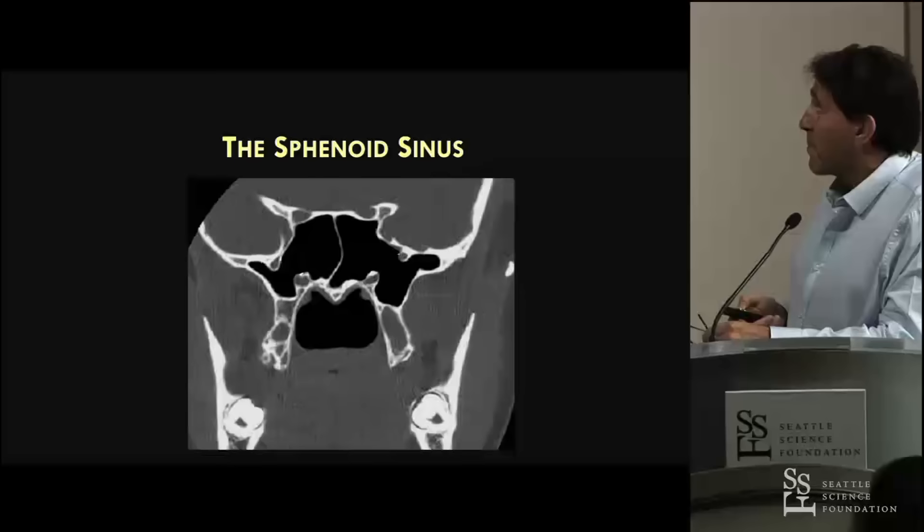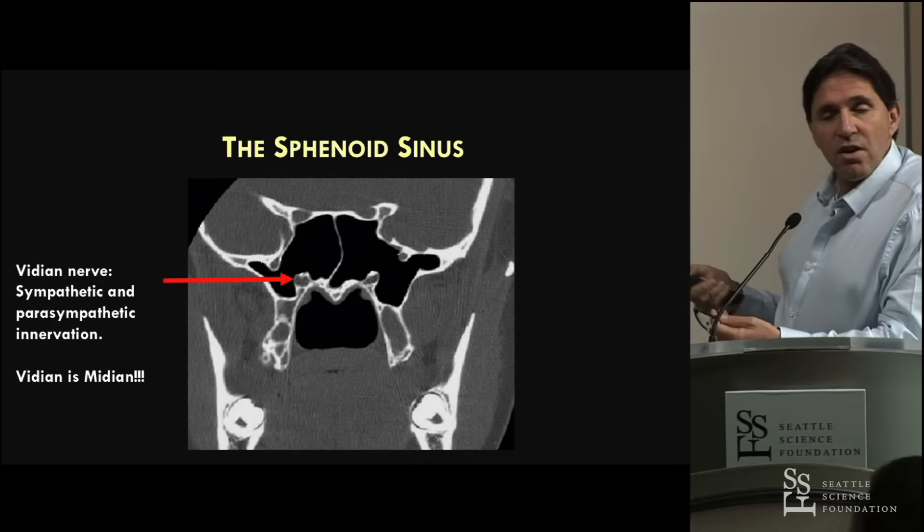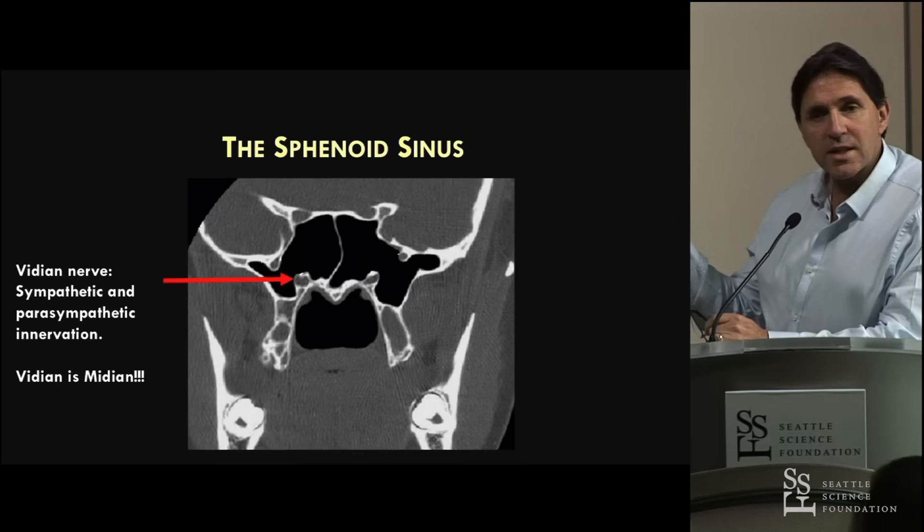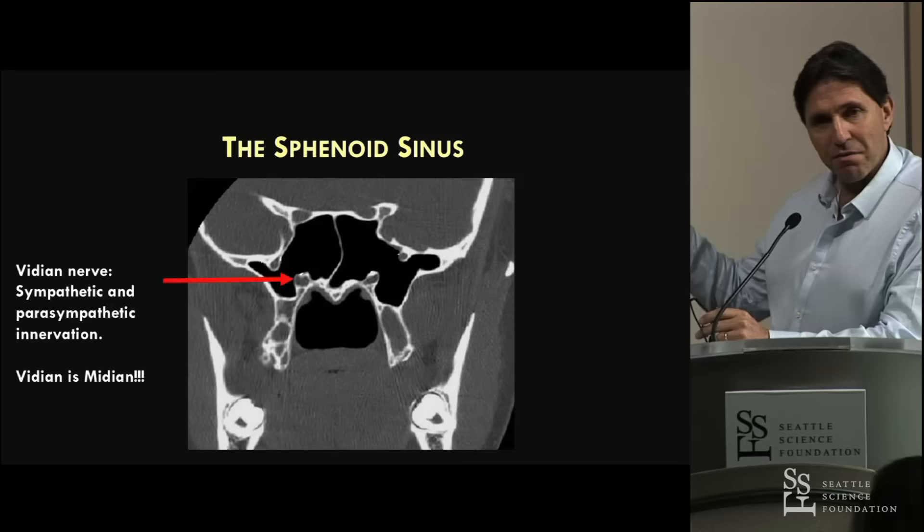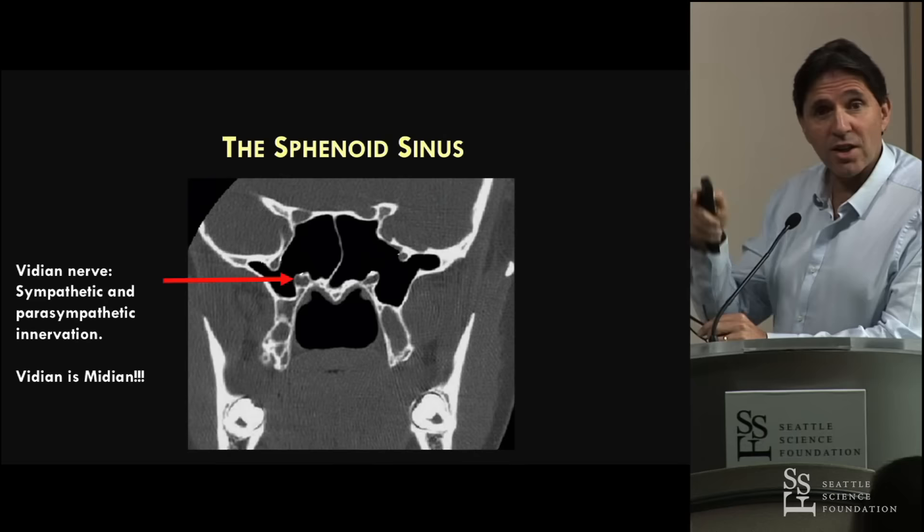In terms of sphenoid sinus, there are a couple of structures you need to identify on your coronal scan. There's the vidian nerve, which contains sympathetic and parasympathetic innervation - I call it 'vidian is midian' because it's always medial. It's at the junction of the floor of the sphenoid and the medial pterygoid plate, a very consistent landmark. I love the vidian nerve because it takes me straight to the carotid - I just follow it to the carotid canal.